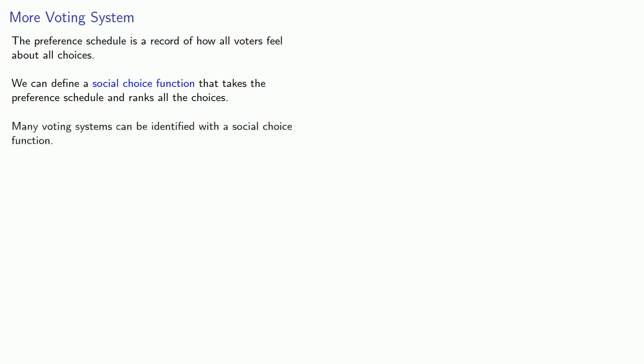Now, many voting systems can be identified with a social choice function, but as we saw, plurality fails the Condorcet winning condition, and in fact it often elects the Condorcet loser. So, can we try to do better?